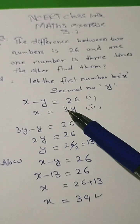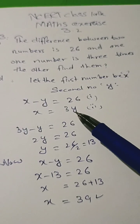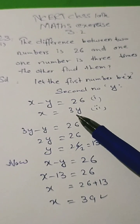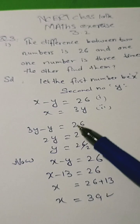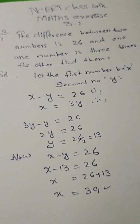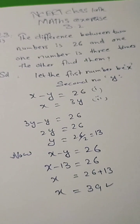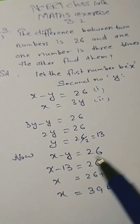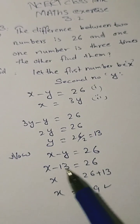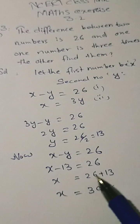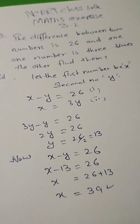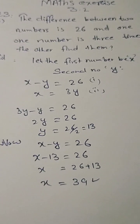Since x is equal to 3y, substituting gives 3y minus y is equal to 26, so 2y equals 26, and y is equal to 13. Then x minus 13 equals 26, giving x is equal to 39.